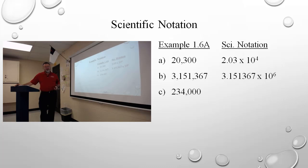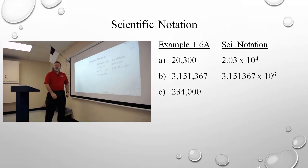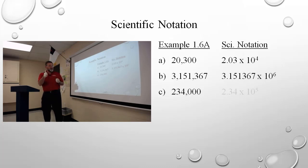So, 234,000. Hopefully now you're seeing that there are three significant digits: the two, the three, and the four. Trailing zeros are not significant. My answer has to have the two, three, and four in that order. The decimal goes after the first digit, so it would be 2.34. I've moved the decimal one, two, three, four, five places. So I'm taking a large number representing it as a smaller number — I need to take times ten to the zero and raise it five places. So I've got 2.34 times ten to the fifth.